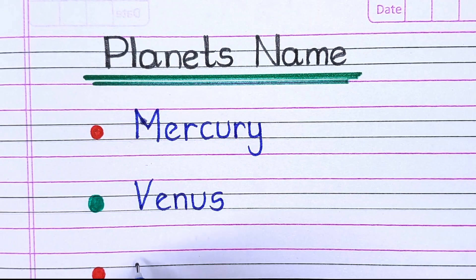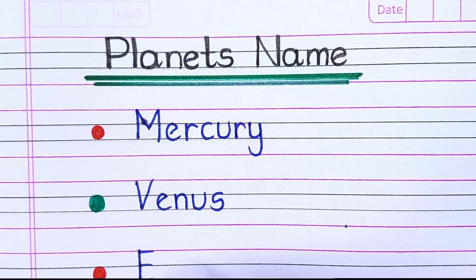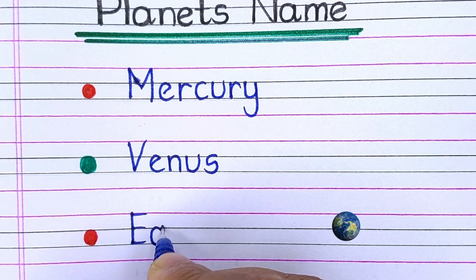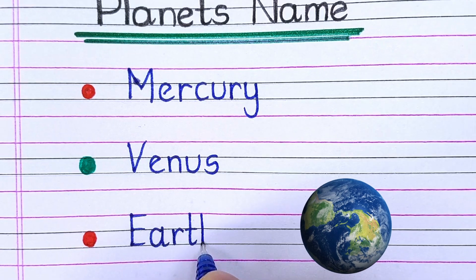The third planet of our solar system is E-A-R-T-H Earth